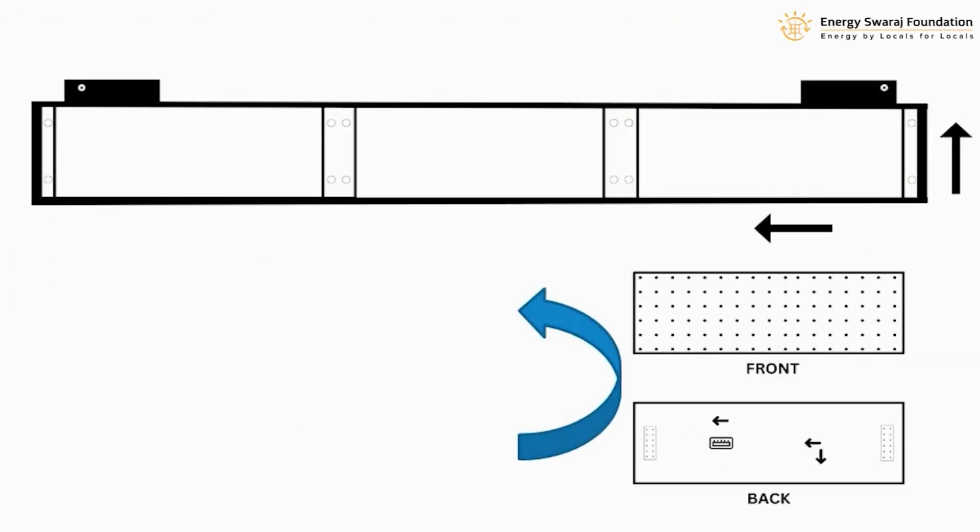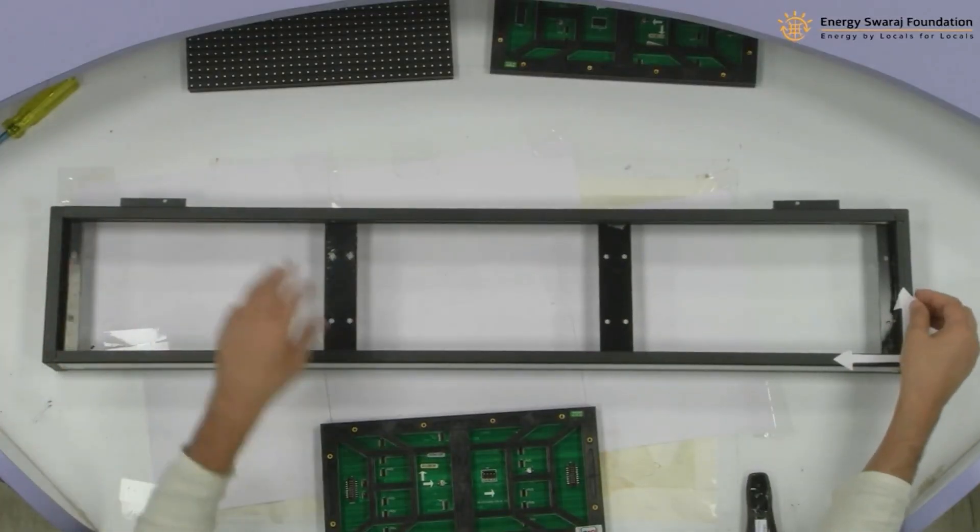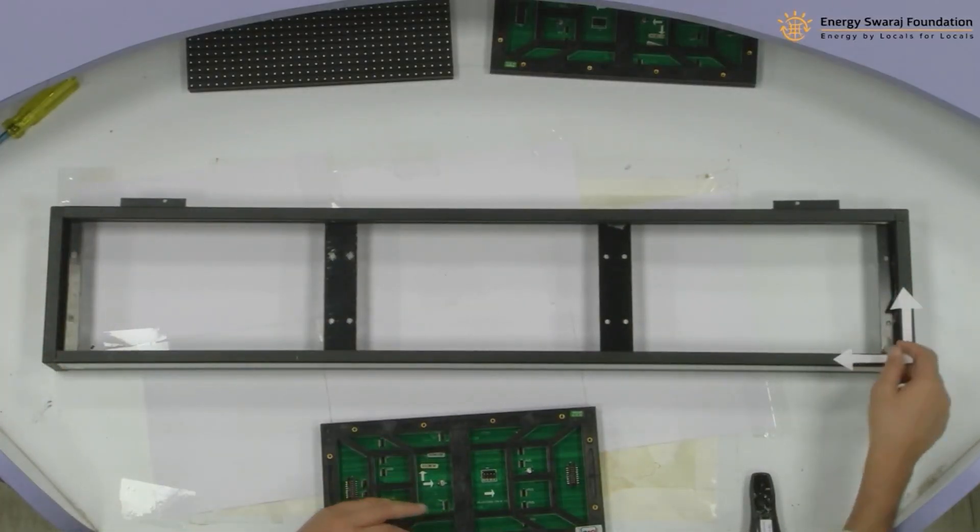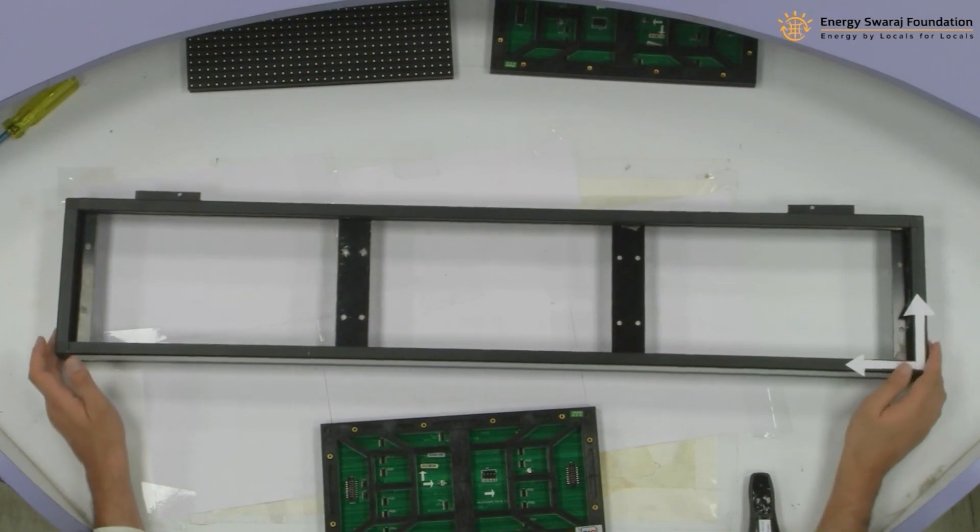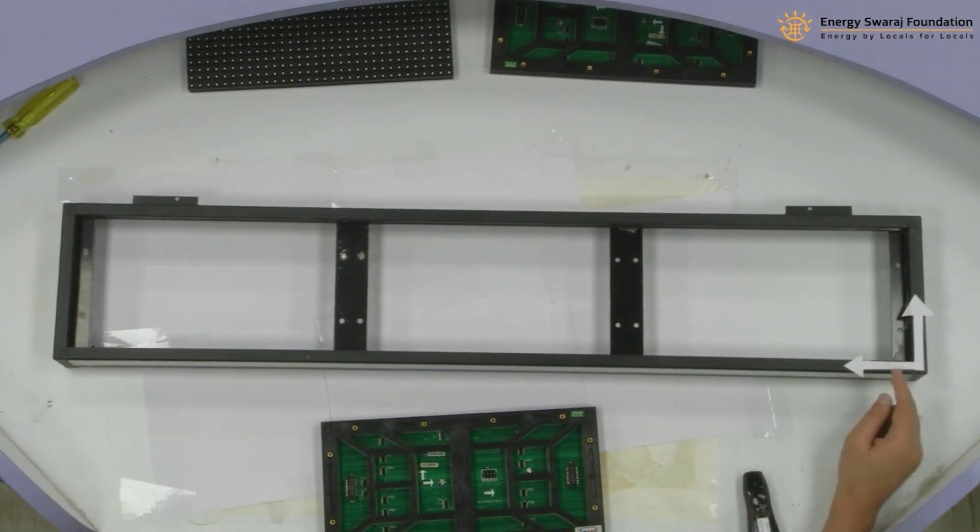What I am going to do is start this assembly by putting my module frame in the right direction. I need to put my frame in the direction where the arrows are visible. You see, these arrows are visible, and I have to arrange my LED panel according to these two arrows. These two arrows here should actually match these two arrows just to ensure that it is in the right direction.